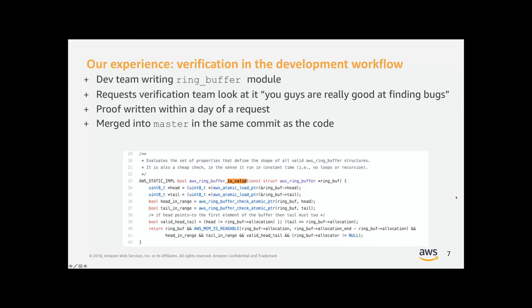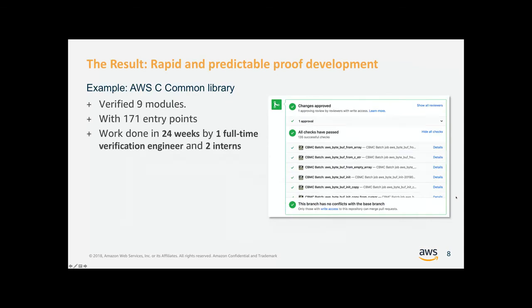If you look in the code itself, this is the contract that describes the ring buffer. It's somewhat complicated, but it's there, checked at runtime with assertions, and it provides the precise definition of what a valid ring buffer is. The result of this is that we were able to have a predictable cadence for developing proofs — verifying a large industrial codebase with 171 entry points across nine modules in 24 weeks with a single verification engineer backed by two interns.